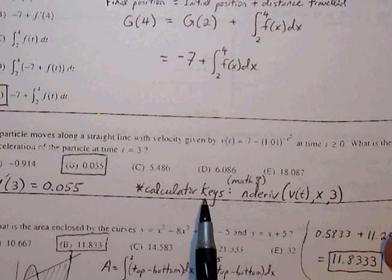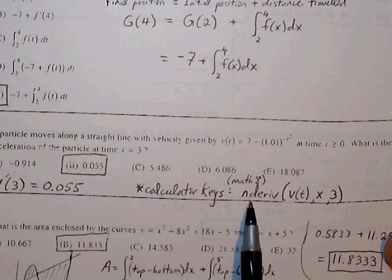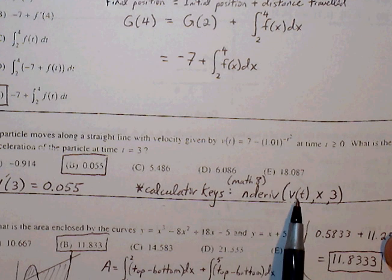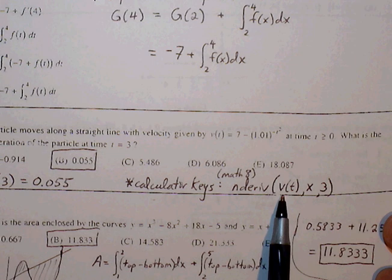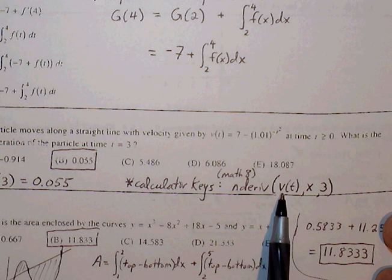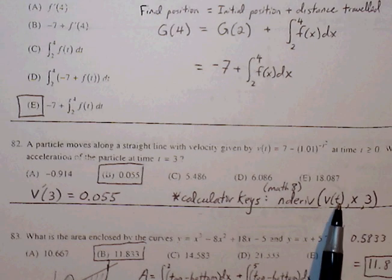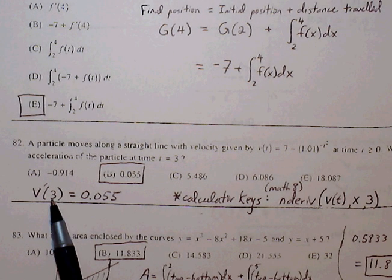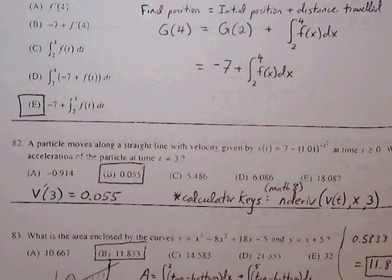Use your graphing calculator for that. So if you do math 8 on your calculator, which is n-deriv, then you can plug in your velocity function, negative 7 minus negative 1.01 to the negative t squared, comma x, comma 3. And then this will essentially give you the acceleration at t equals 3, which is 0.055.